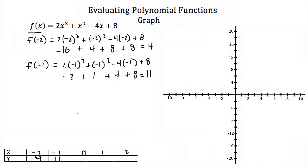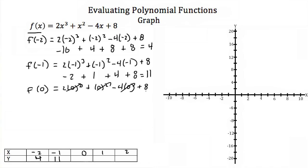Now let's try x = 0. f(0) = 2(0)³ + 0² − 4(0) + 8. All three of our first terms go to 0 because anything times 0 is 0. So we're just left with our 8. Our function value when x = 0 is 8.